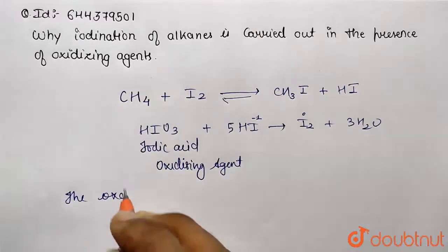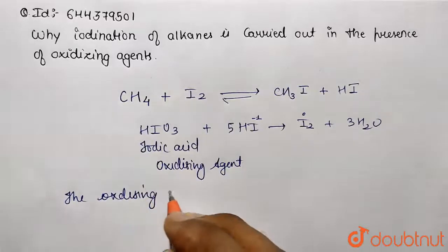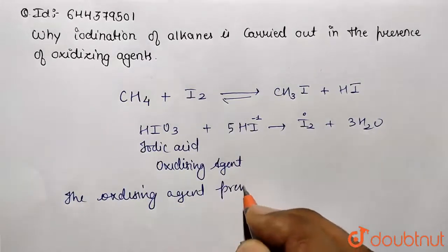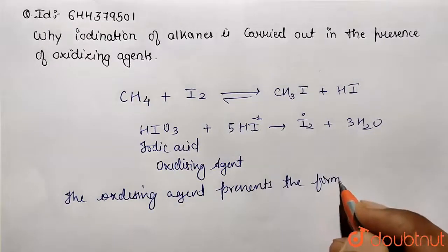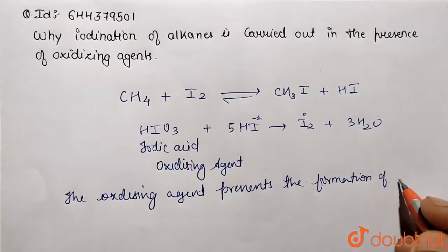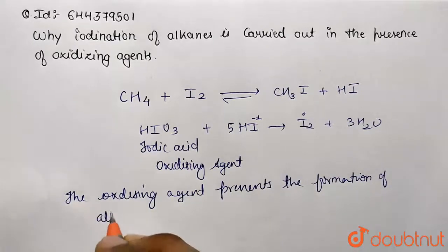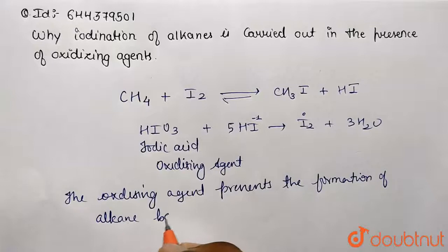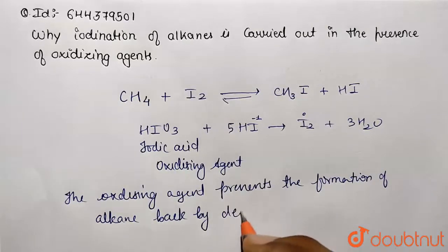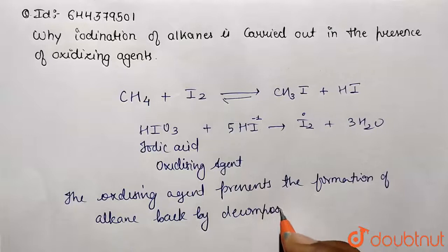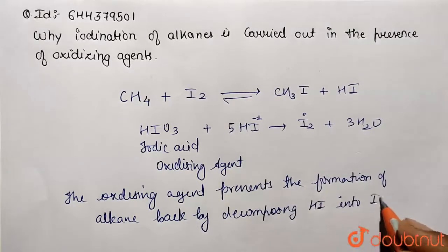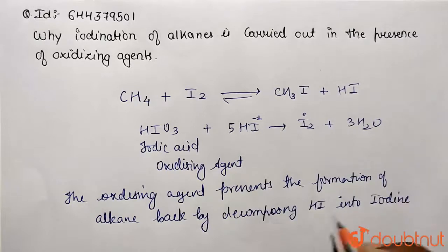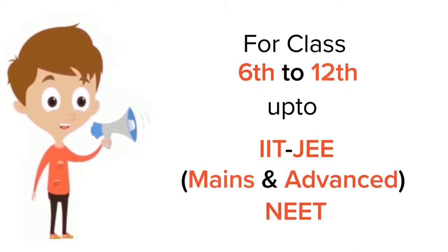We can summarize like that: the oxidizing agent prevents the formation of alkane back by decomposing HI into iodine. So this was the solution, thank you. For class 6 to 12, IIT-JEE and NEET level, trusted by more than five crore students.